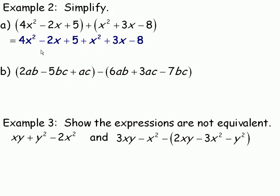We'll collect the like terms. 4x squared and 1x squared would be 5x squared. Negative 2x plus 3x is 1x. And 5 take away 8 is minus 3. So 5x squared plus x minus 3 is what this polynomial sum simplifies to.